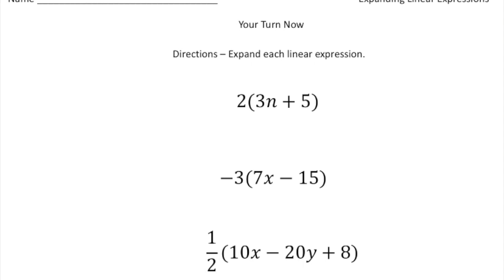Alright, welcome back. Let's see how you did with these practice problems. So here we have two groups of 3n plus 5. So 2 times 3n, that will give us 6n plus, and then 2 times 5 gives us 10. So 6n plus 10, that's our answer.